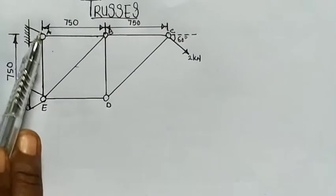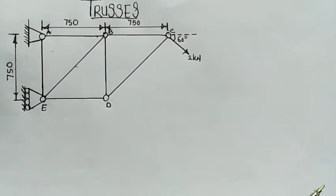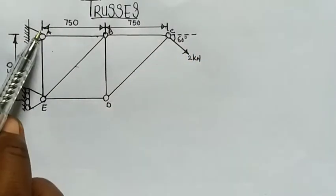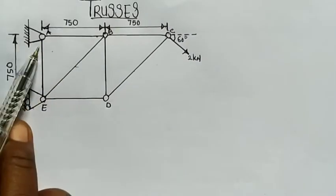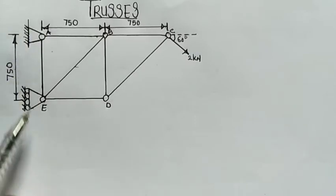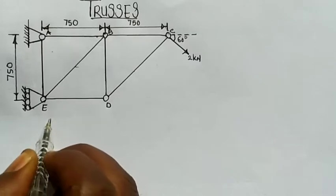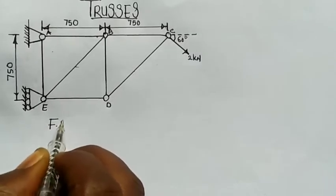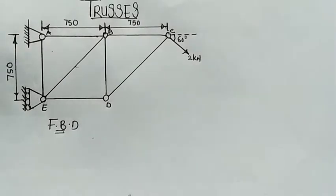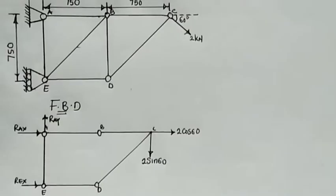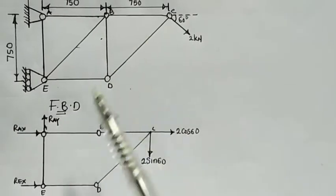Before we calculate the forces, we need to know the reactions at the supports. The first step in solving this question is to calculate each reaction. We do that by converting the supports into reactions in our free body diagram. The free body diagram shows all external forces acting on the system.